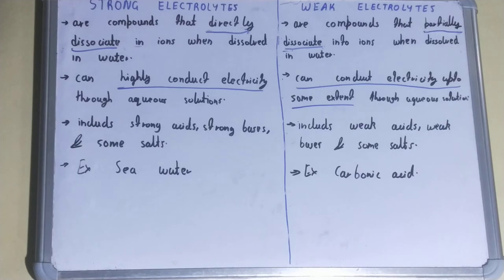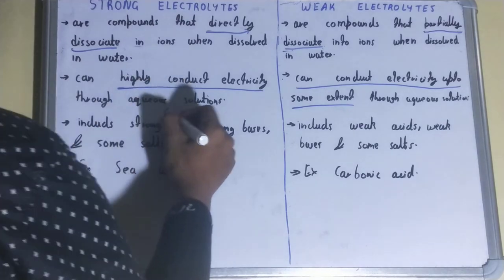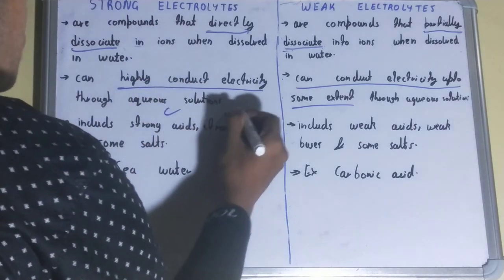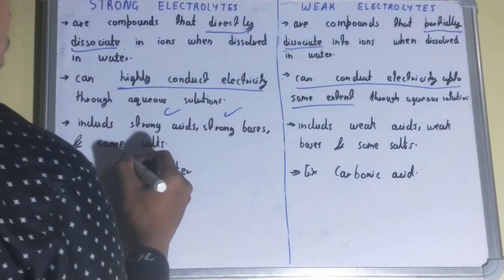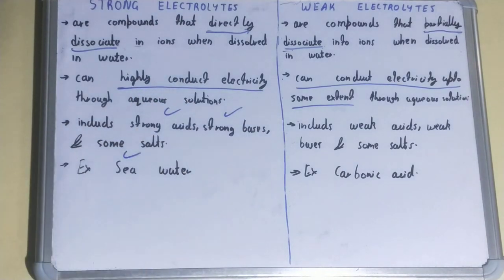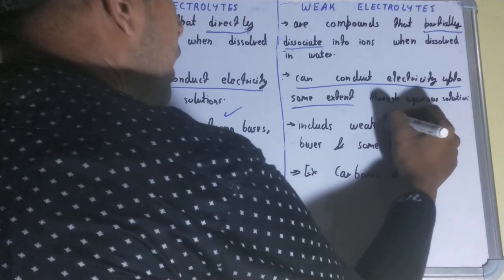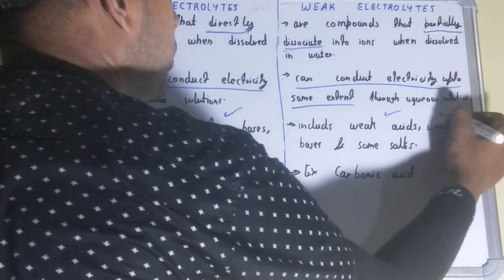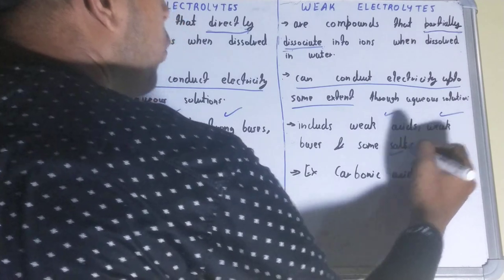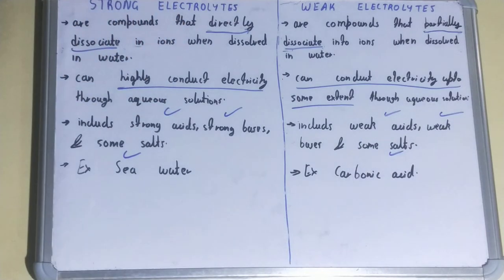If we talk about the strong electrolyte, these include strong acids, strong bases, and strong salts. But if we talk about the weak electrolyte, then weak acids, weak bases, and weak salts are examples.